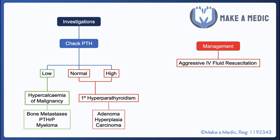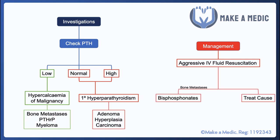The first step in treating hypercalcemia is aggressive IV fluid resuscitation. This is because calcium is an osmotic substance and causes a profound diuresis, leaving patients very dehydrated — so rapid, aggressive fluid resuscitation is needed. Moving on, it's important to identify and treat the underlying cause; fluid resuscitation only provides a temporary improvement in serum calcium. If the cause is hyperparathyroidism, the patient may need a parathyroidectomy. If hypercalcemia results from bone metastases, bisphosphonates tend to be used, as they can also reduce the bony pain associated with bone metastases.